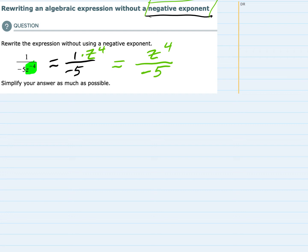Again, we don't have to get rid of negative numbers, just negative exponents. We've gotten rid of our negative exponent, so z to the fourth over negative 5.